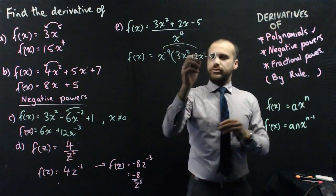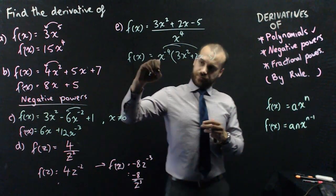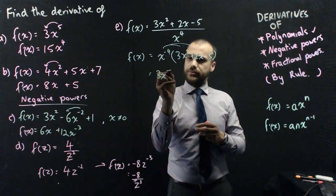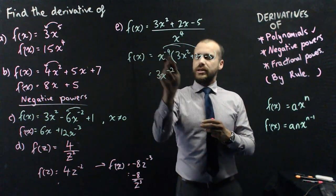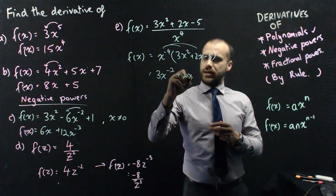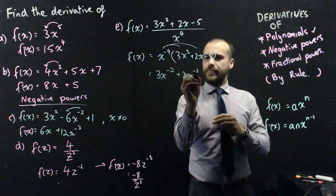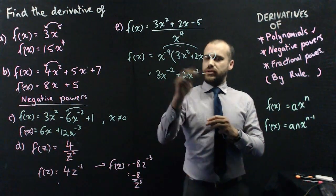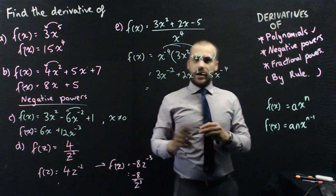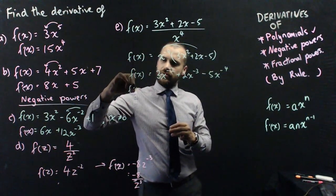Now I've really just moved that x to the 4 to the top to make negative 4. Now multiplying through, if you're a bit careful, x to the negative 4 times 3x squared is going to be 3x to the negative 2. Negative 4 plus 2 is negative 2. Now x to the negative 4 times 2x is going to be 2x to the negative 3. And then negative 5 times x to the negative 4 is negative 5x to the negative 4. And that's still f of x, but now I can find a derivative.